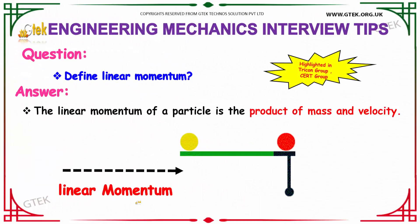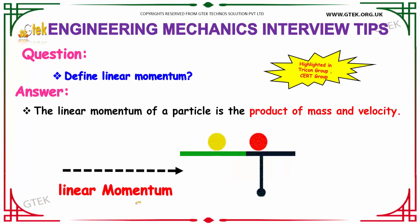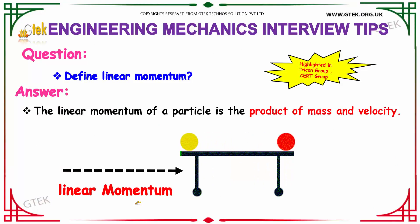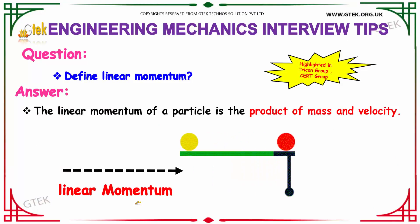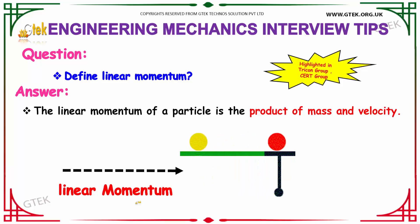Define linear momentum. The linear momentum of a particle is the product of mass and velocity.